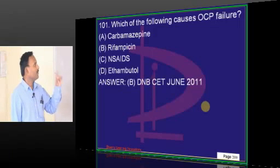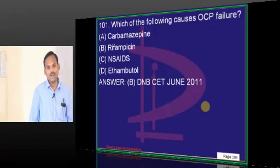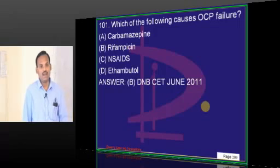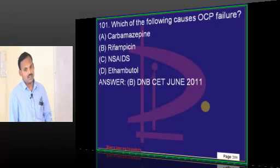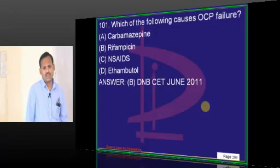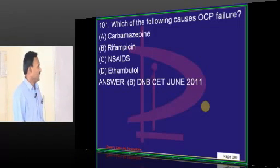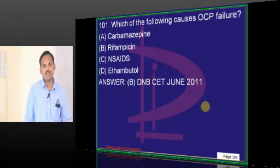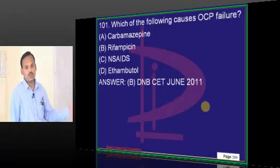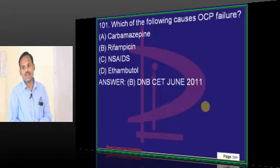Most importantly, it is rifampicin which will induce the metabolism of the combined contraceptive pill, leading to failure of contraception. NSAIDs do not induce or inhibit microsomal enzymes. Ethambutol does not induce or inhibit enzymes. So only rifampicin has the capability to induce microsomal enzymes and induce metabolism of OC pills, therefore causing failure of contraception.